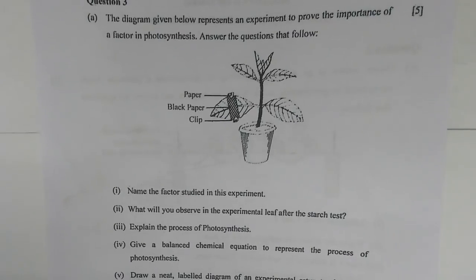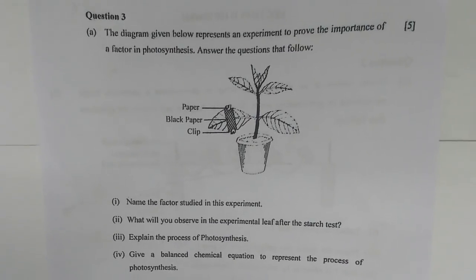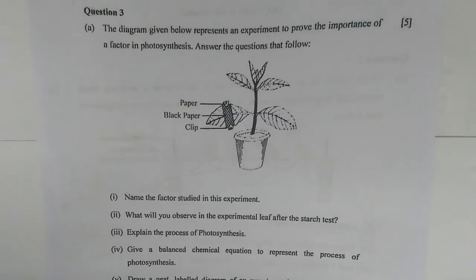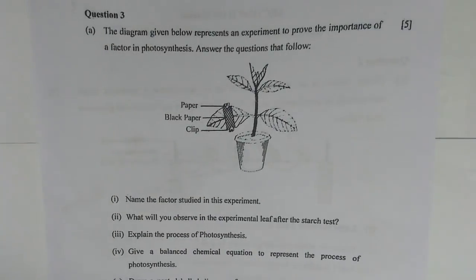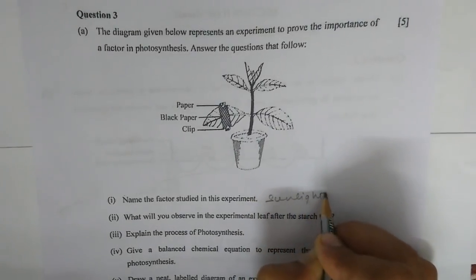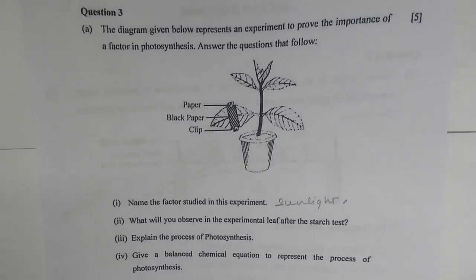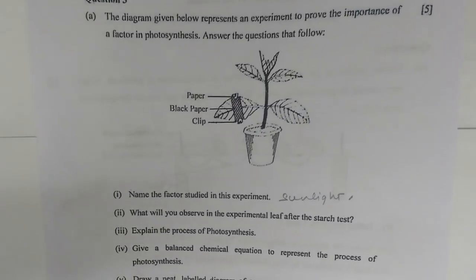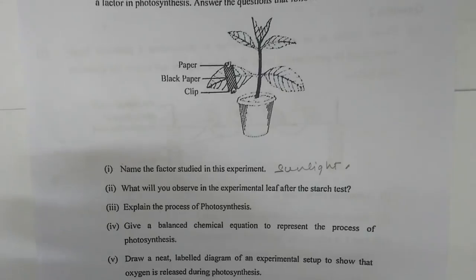Question 3a: The diagram given below represents an experiment to prove the importance of a factor in photosynthesis. Number one — name the factor studied in this experiment. The factor is sunlight, and the aim is to prove that sunlight is necessary for photosynthesis. Number two — what will you observe in the experimental leaf after the starch test? When the iodine test is conducted,